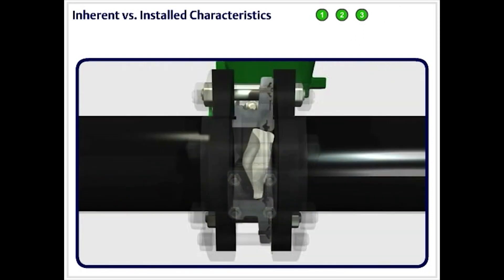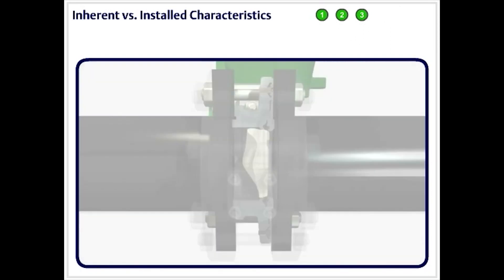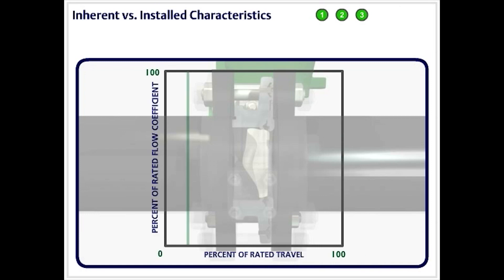The control disk has an inherent equal percentage flow characteristic that is represented graphically by this exponential curve. Note the lower flow rate, which affords better control at low to mid-valve open positions, with a rapid change in flow rate as the valve approaches full open.